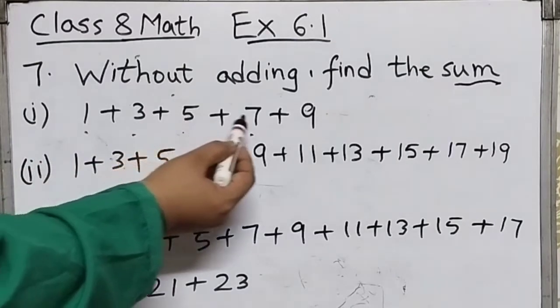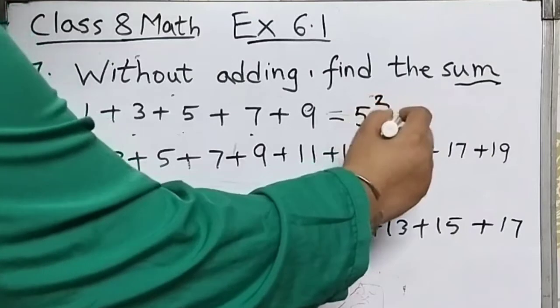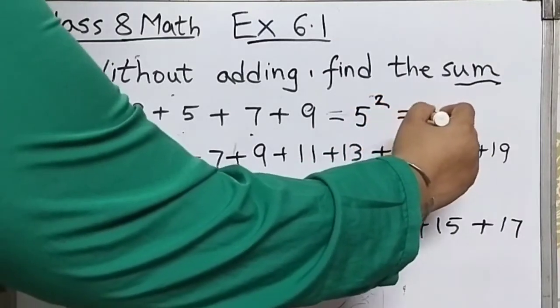1, 2, 3, 4, 5. So that equals to 5 squared, and that is 25.